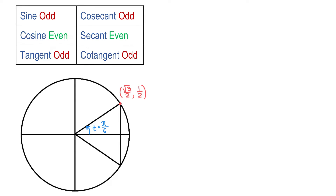Notice that for this point both x and y are positive. If from the positive x-axis we move in a clockwise direction, then we will have a negative angle. So if in the positive direction we have t equal to pi over 6,